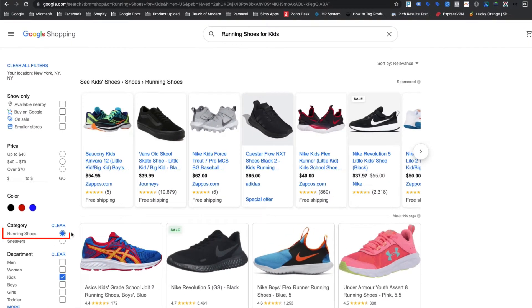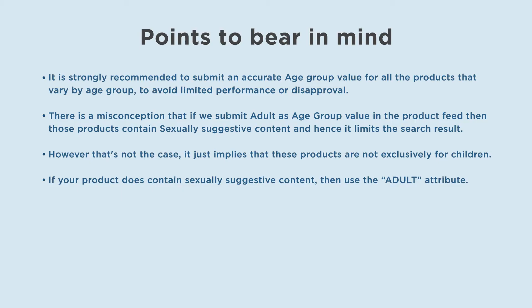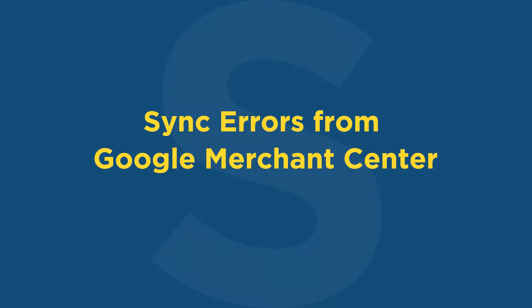Adding age group can help ensure that products are shown with the right search results, boosting conversion rates — this is especially important when products vary by age. Searching for 'running shoes for kids' shows shopping ads with a pre-applied filter for the kids department. It is strongly recommended to submit an accurate age group value for all products that vary by age group to avoid limited performance or disapproval. Note: submitting 'adult' as the age group value does not imply sexually suggestive content — it simply means the product is not exclusively for children. If a product does contain sexually suggestive content, use the adult attribute instead.